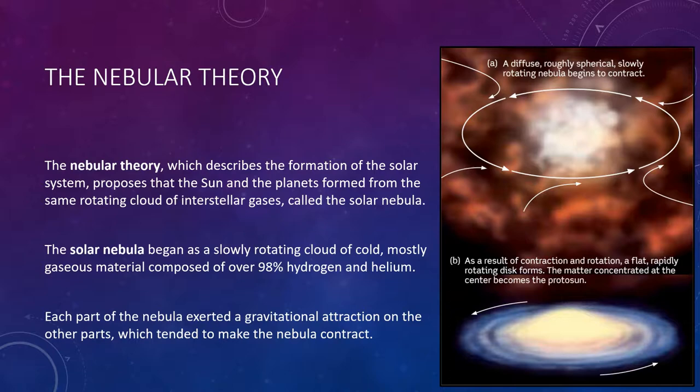Initially, this gas was probably so spread out—perhaps over a region of a few light-years in diameter—that gravity alone may not have been strong enough to pull it together and start its collapse. Instead, the collapse may have been triggered by a cataclysmic event, such as the impact of a shockwave from the explosion of a nearby star—in other words, a supernova.